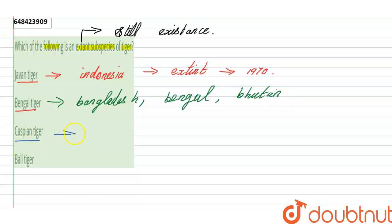The next one is Caspian tiger, and these Caspian tiger belongs to Indonesia. It belongs to Indonesia and they were extinct in 1970.